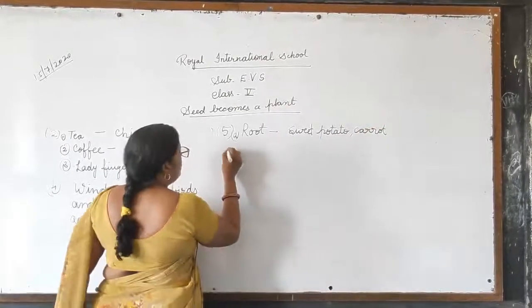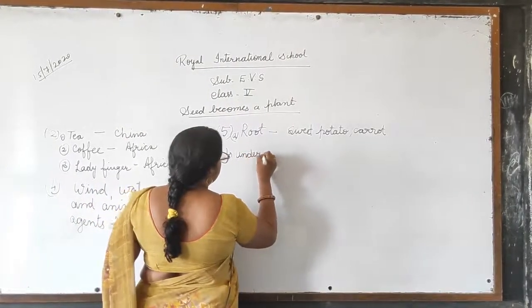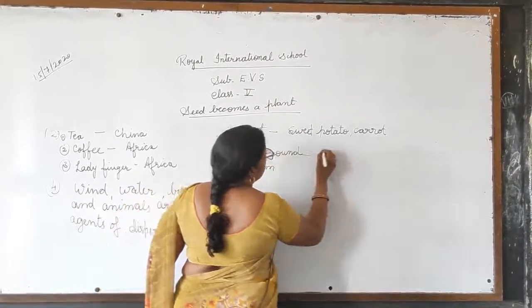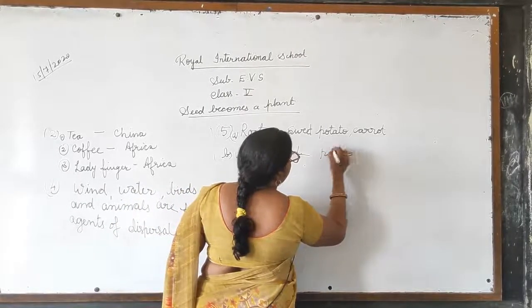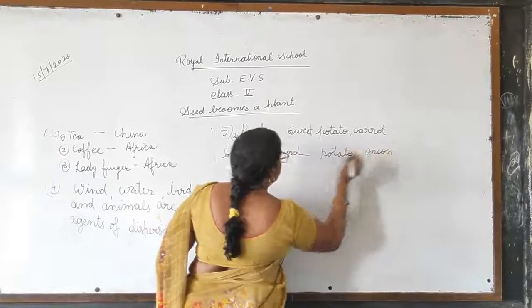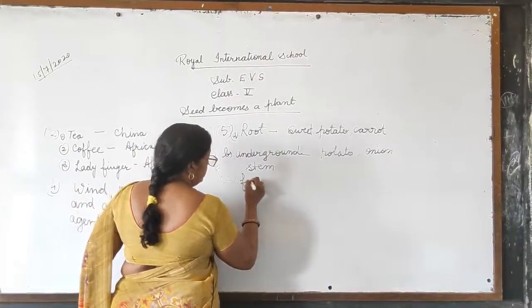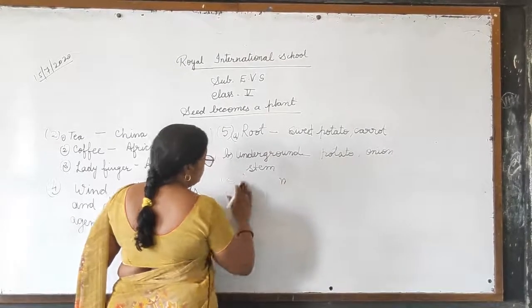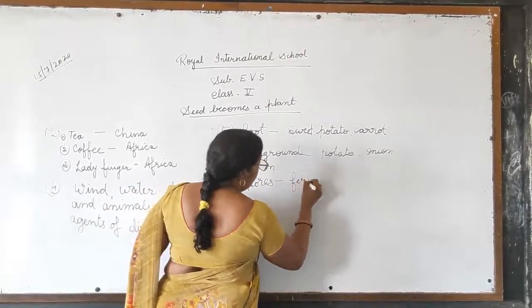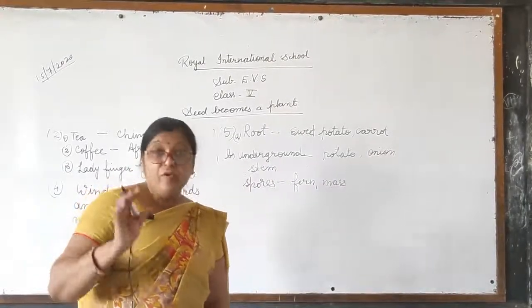Number two, part B is underground stem. For underground stem, one example is potato and another is onion. Part C is spores — S-P-O-R-E-S. Spores: fern and moss reproduce by spores. Now we have completed the fifth question.